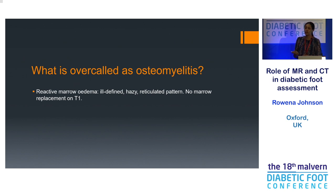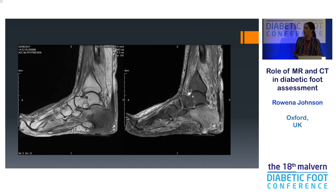What is overcalled as osteomyelitis? Reactive marrow oedema — I keep repeating it because it always gets overcalled. On this sagittal of the foot, you can see the big ulcer at the heel going up via a sinus tract, and the whole calcaneus is of abnormal signal — initially reported as osteomyelitis throughout. But the corresponding T1 shows the osteomyelitis is extensive up to a certain point but does not reach the subtalar joint. The area above that shows reactive marrow oedema — fat is still visible there. That's not infection.